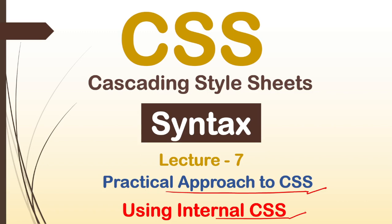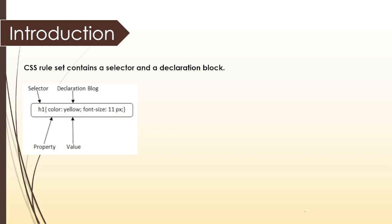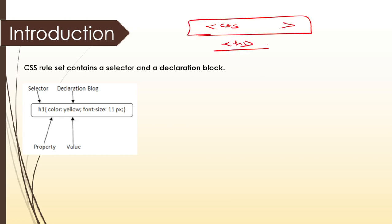As we discussed in the previous lecture, inline CSS means we can use cascading style sheets properties only on a single statement — only one HTML tag at a time. But if we talk about internal CSS, it is used to add a unique style for a single document, not for a single statement or a single tag. Remember: internal style sheet is used to add a unique style for a single document.